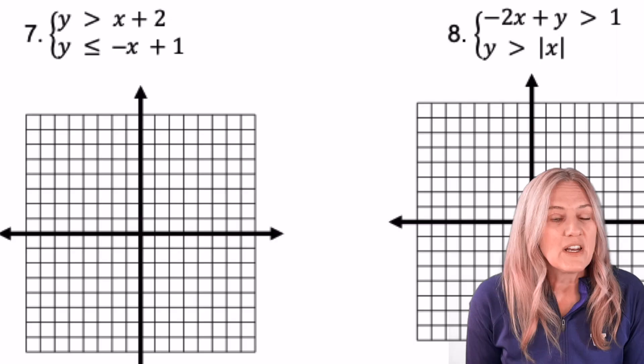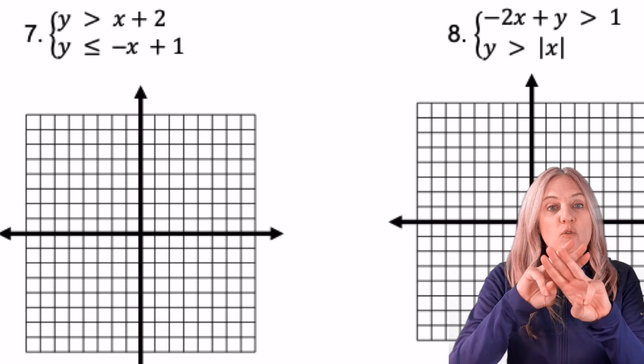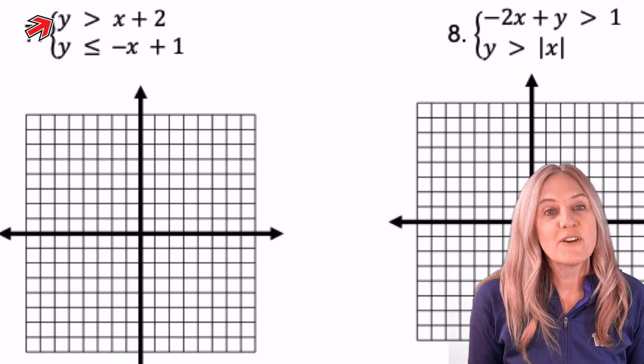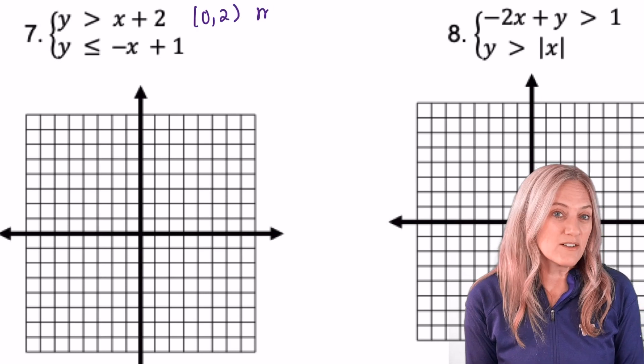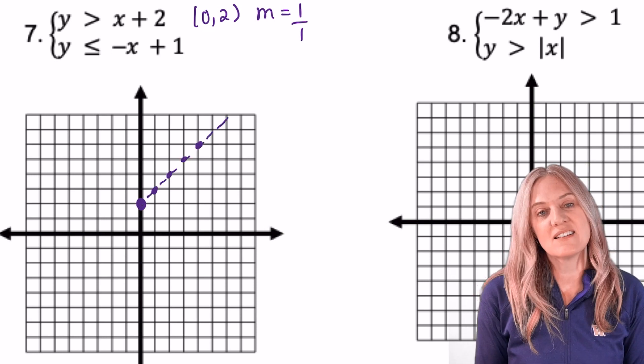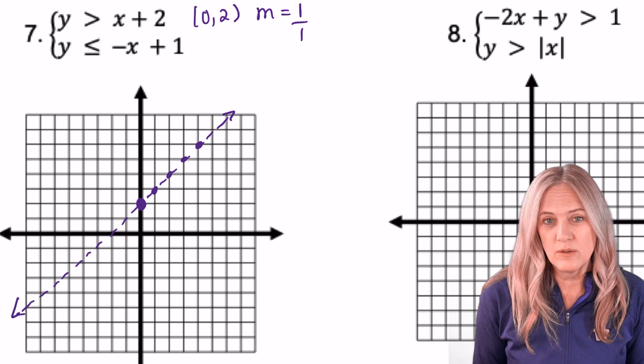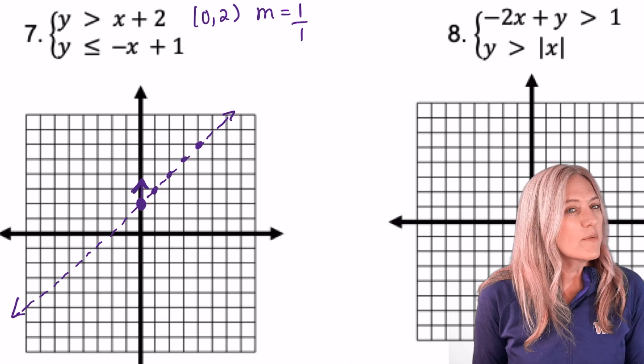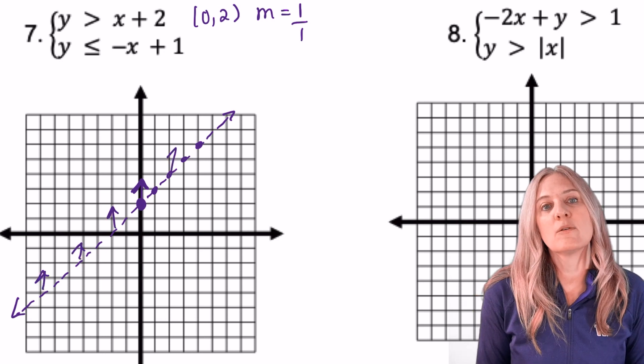Now we're going to graph a system of inequalities. So go ahead and graph each one. Then we look for where the overlapping shaded region is, and that will be the solution to the system of inequalities. The first inequality, y greater than x plus 2. Let's graph the line has the y-intercept of 0, 2, and a slope of 1. It needs to be dashed because it's not equal to. Next, decide whether you're going to shade above or below. Remember that we put our pen on that y-intercept, and it says greater than, so we'll draw an arrow. Now this time I'm not actually going to shade yet, and I might put a few more arrows along the line.